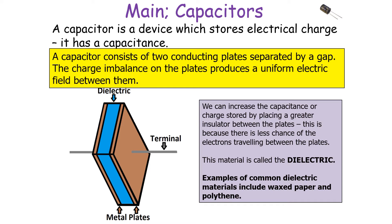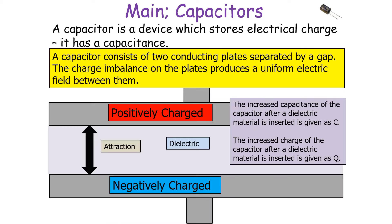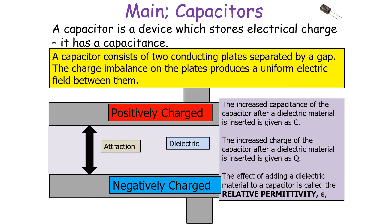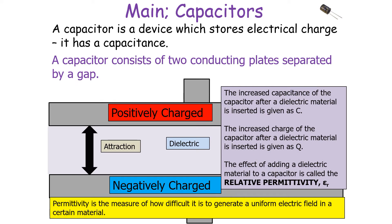Examples of common dielectric materials include wax paper and polythene. The increased capacitance of a capacitor after a dielectric material is inserted between the two plates is given as C, and the increased charge after dielectric material is inserted is given as Q. The effect of adding a dielectric material leads to a quantity called relative permittivity. Permittivity is the measure of how difficult it is to generate a uniform electrical field in a certain material.